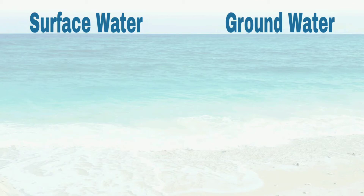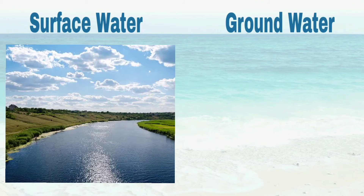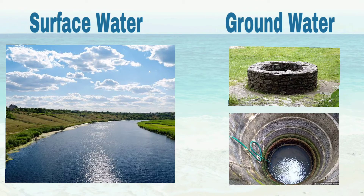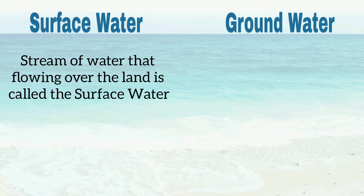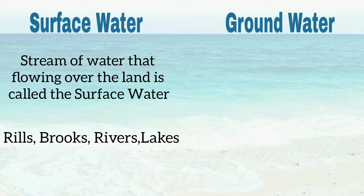Now let's look at surface water and ground water. Surface water is the water flowing over the land — it includes rills, brooks, rivers, and lakes. Ground water is the water stored in underground layers of rock, and includes wells and bore wells.